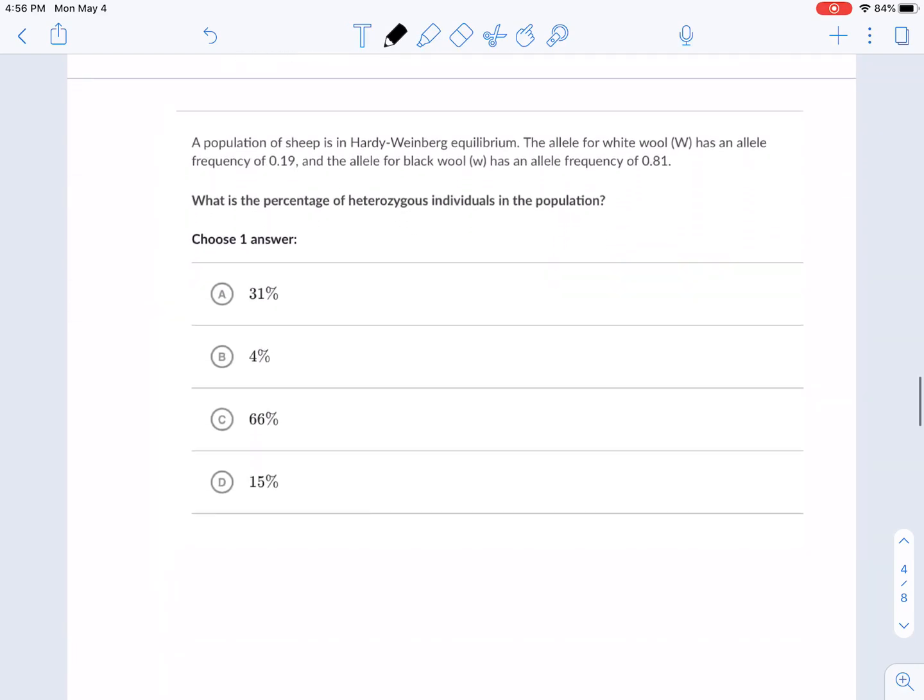Let's try another one. So a population of sheep is in Hardy-Weinberg equilibrium. The allele for white wool, which you can see is dominant capital, has a frequency of 0.19. And the allele for lowercase, so this is recessive, the black wool, has an allele frequency of 0.81. So this is telling us that P plus Q equals 1. P, dominant, is 0.19, plus Q, recessive, 0.81, equals to 1. That's correct.